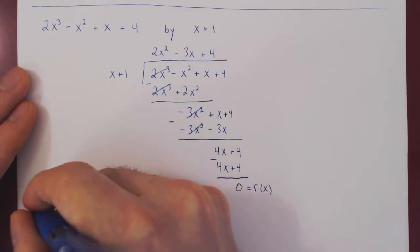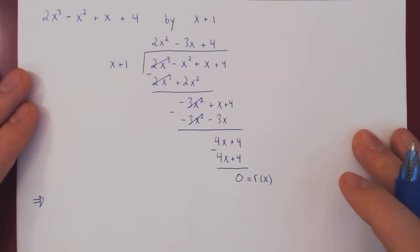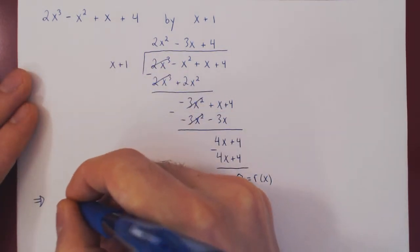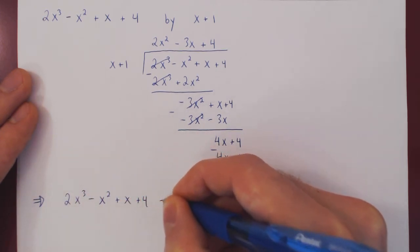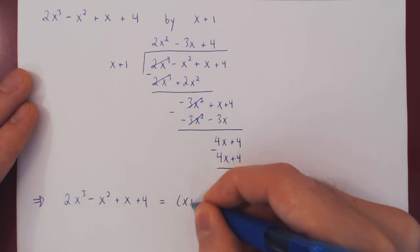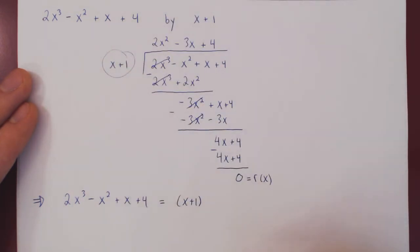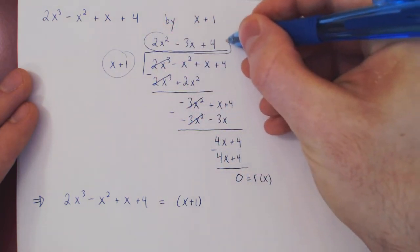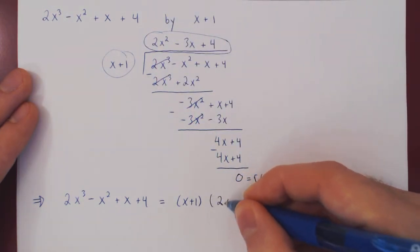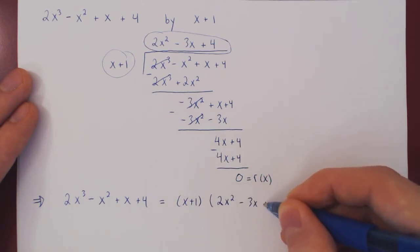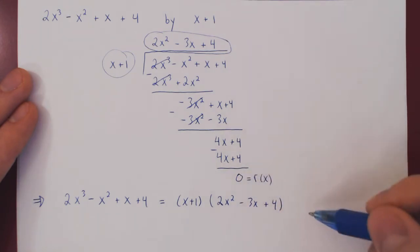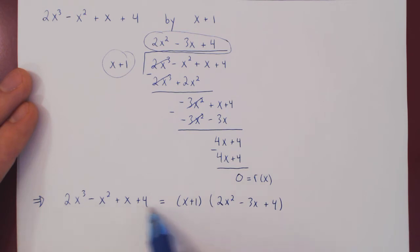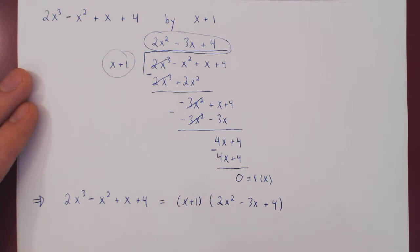This is our conclusion: the original cubic polynomial, 2x cubed minus x squared plus x plus 4, factors as x plus 1 times the quadratic polynomial 2x squared minus 3x plus 4. Plus the remainder — but as the remainder is 0, there's nothing to add. This is very easy to verify: simply multiply out x plus 1 by this quadratic and you will arrive at the original cubic polynomial.